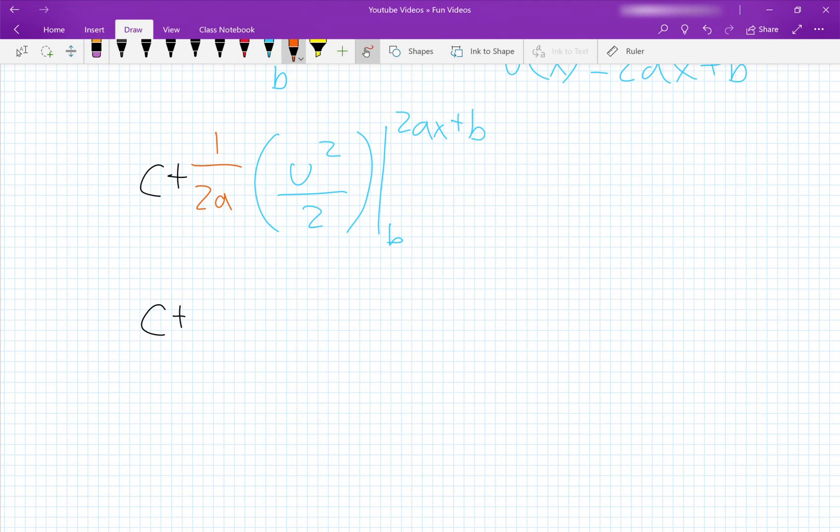So let's expand this. c plus 1 over 2a. And this is going to be a monster equation. That's going to be (2ax plus b) squared over 2 minus b squared over 2.